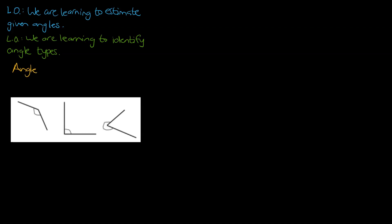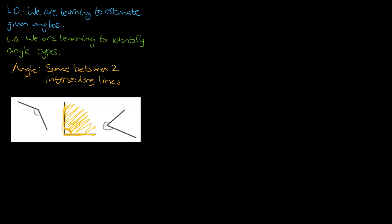I'll try to demonstrate what that is. An angle is a space between two intersecting lines. I've got three examples down there. If you have a look at the example in the middle, this angle here is going to be about 90 degrees. That 90 degrees represents the space between the line along the bottom and the line going up and down.